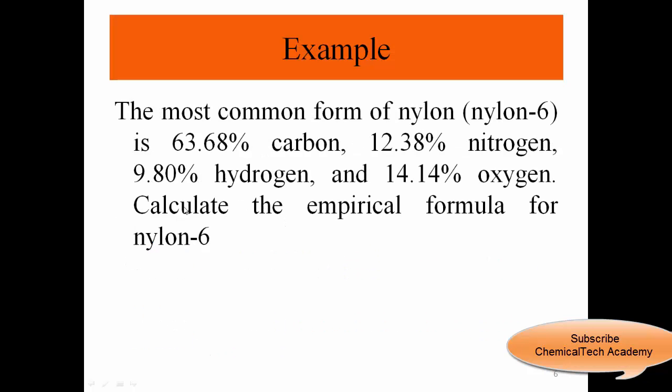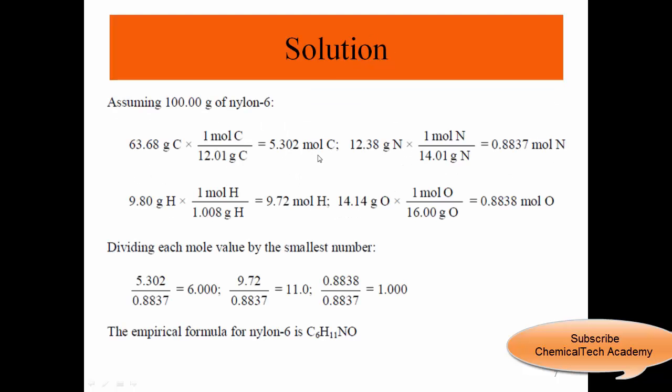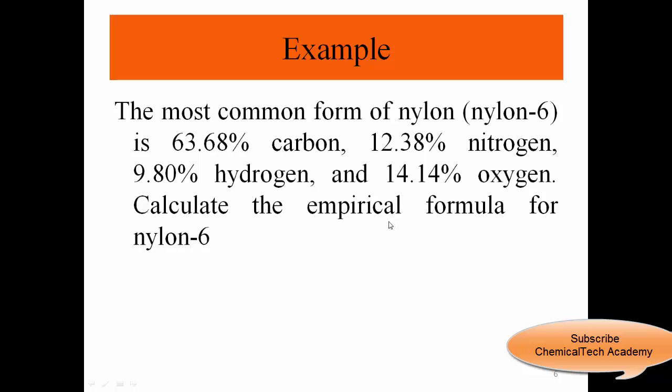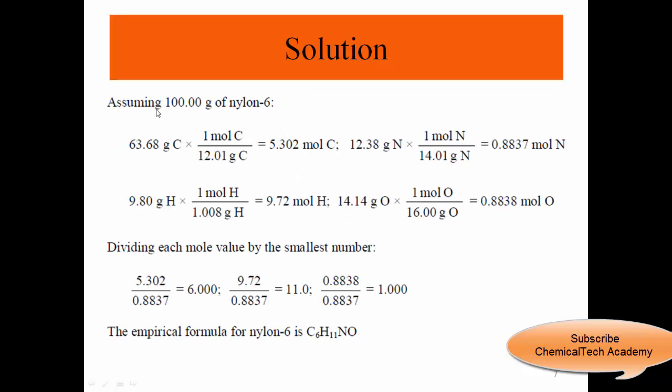The most common form of nylon, nylon-6, is 63.68 percent carbon, 12.38 percent nitrogen, 9.8 percent hydrogen, and 14.14 percent oxygen. Calculate the empirical formula for nylon-6. We have four elements. If we assume we have 100 grams of nylon-6, so 63.68 grams carbon.